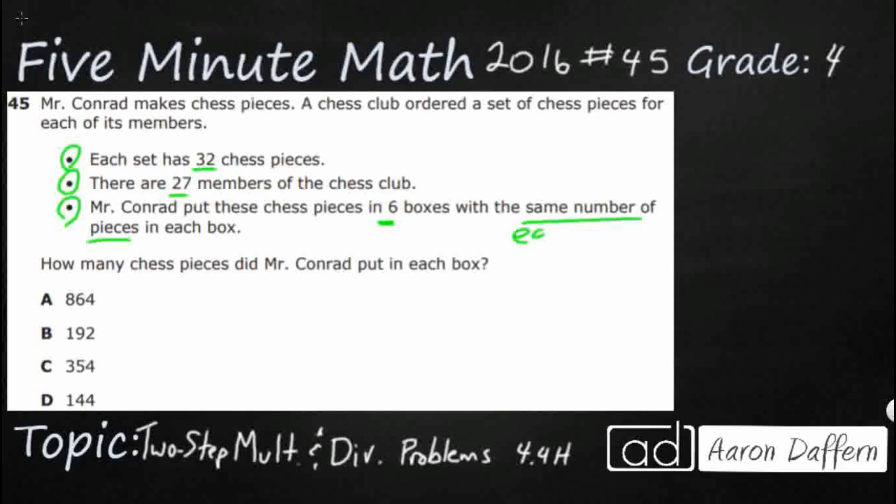So when we're looking at that, we are going to see that we're dealing with equal groups. That's going to let us know we're either going to use multiplication or division. So how many chess pieces did Mr. Conrad put in each box?